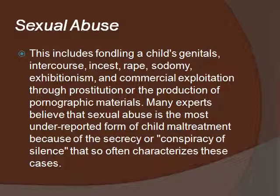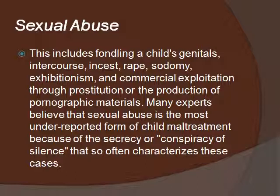Sexual abuse includes fondling a child's genitals, intercourse, incest, rape, sodomy, exhibitionism, and commercial exploitation through prostitution or the production of pornographic materials. Many experts believe sexual abuse is the most under-reported form of child maltreatment because of the secrecy or conspiracy of silence that characterizes these cases. About a third of child sexual abuse cases occur with children under the age of 6, although the riskiest time in general is for girls between ages 8 and 12. Girls older than 12 are more difficult to groom — 'grooming' being the term for when perpetrators prepare a child to be abused.